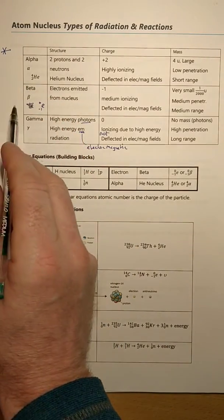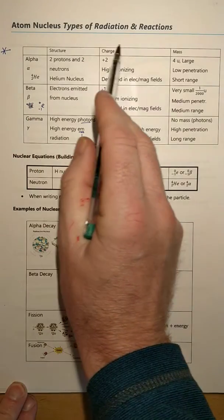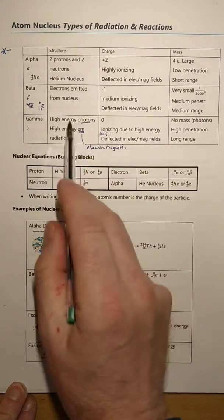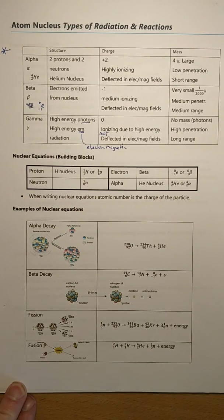So we have the idea of alpha, beta, and gamma, okay, so all of those you should be clear on—the structure, the charge, and the mass. I think we went through that. If we didn't, just have a look at it and make the appropriate changes.